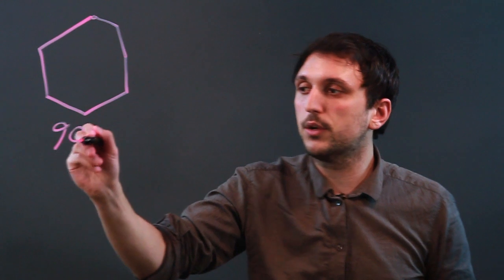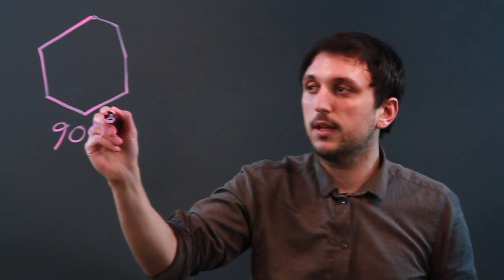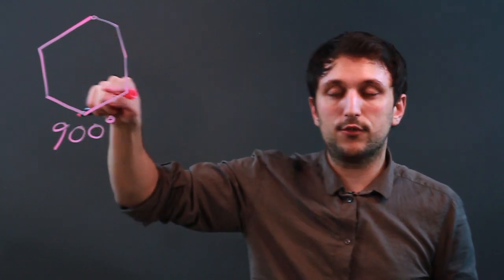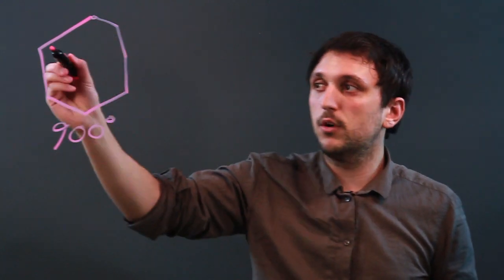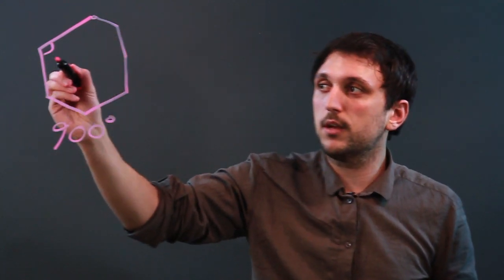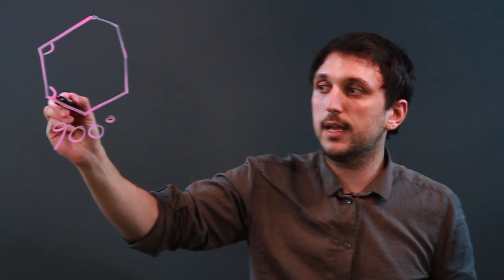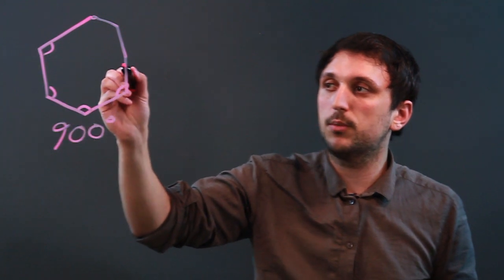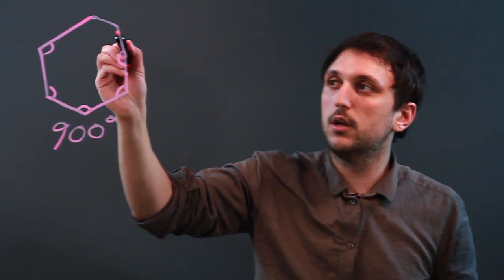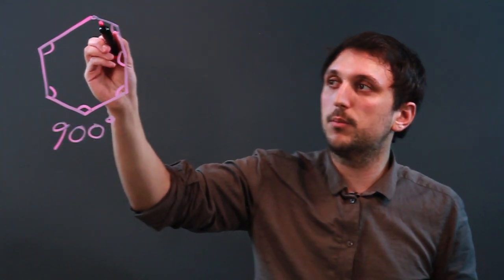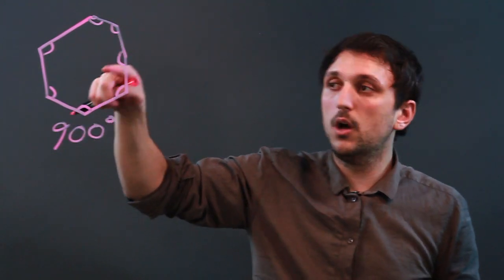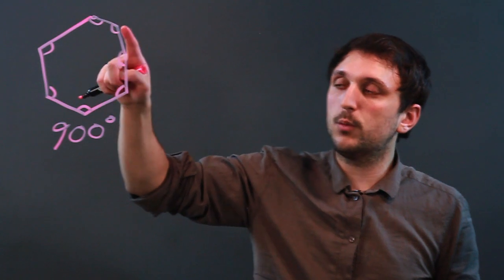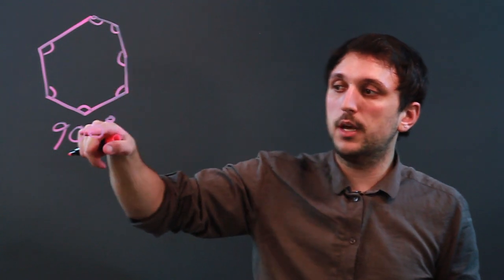Now, all heptagons have 900 degrees inside the shape. So this angle plus this angle plus this angle plus this angle plus this angle plus this angle plus this angle all have to equal 900.